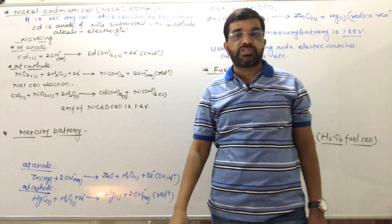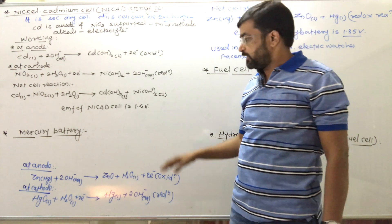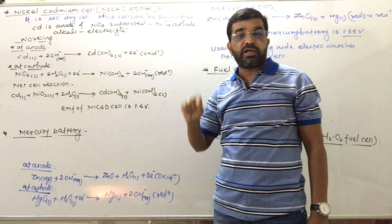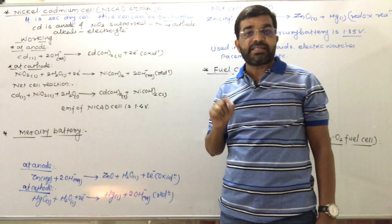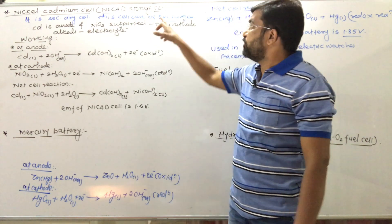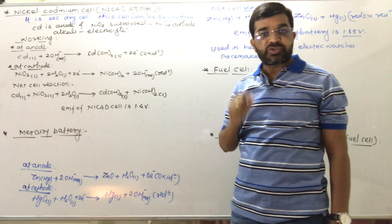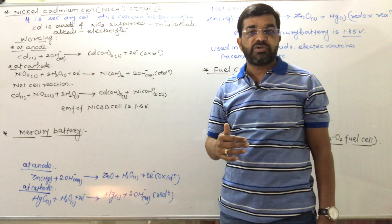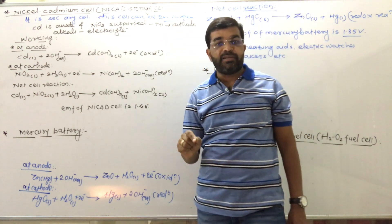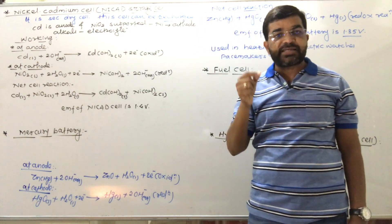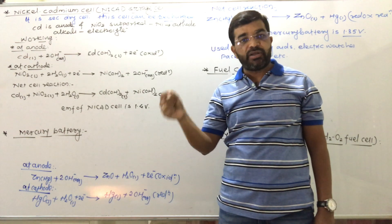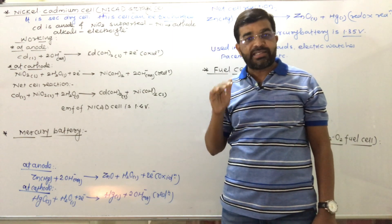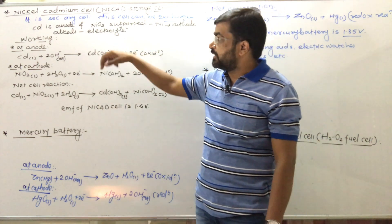Today we will study another common type of cell — the nickel-cadmium cell — and then the mercury battery and the fuel cell. The nickel-cadmium cell is a secondary dry cell. It is called secondary because it can be recharged: if an external EMF greater than the cell's EMF is applied, the cell reactions can be reversed. The anode is cadmium metal, the cathode is nickel dioxide supported on nickel, and both electrodes are placed in the same alkaline electrolyte.